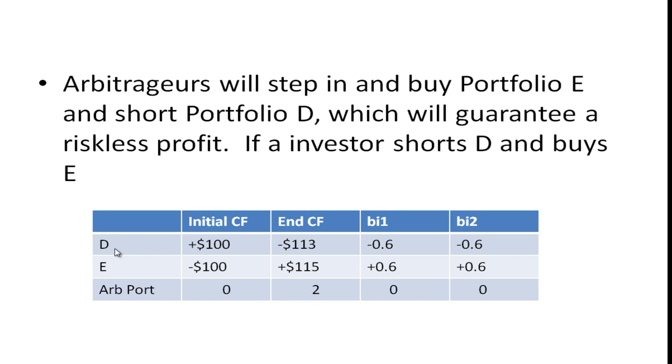So if we look down here, we short D. Our initial cash flow: we get $100 because we sold it short, but we have to pay back $113—that's 13%—so we're going to pay back the hundred plus 13% of that. It has the same risk, and because we're shorting it, it has negative betas here. Portfolio E: we're going to spend that $100 to buy portfolio E, and we're going to get back $115 when it matures. These are going to have positive risk factors. So what do you see here? There's no cost to this investment, there's no risk—these are zero—yet you get a positive cash flow. And what's that going to do? That's going to drive up the price of E because everybody's buying it. That's going to drive the price of E up enough so that the return is just going to be equal to what it should be, which is 13%.